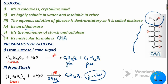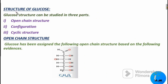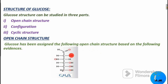Next we move to the important part of the session: the structural elucidation of glucose. The glucose structure can be studied in three parts — the open chain structure, configuration, and cyclic structure. Today we are going to see the open chain structure as well as the configuration in detail. The open chain structure of glucose has been assigned based on the following evidence.